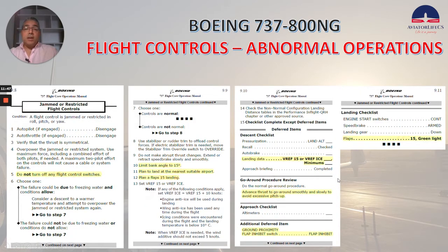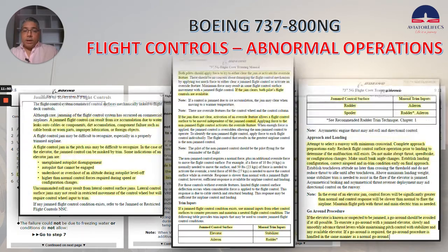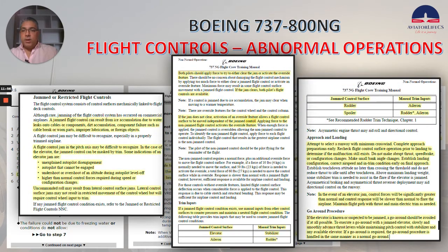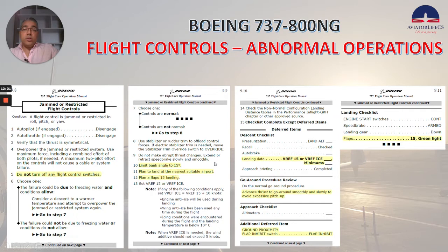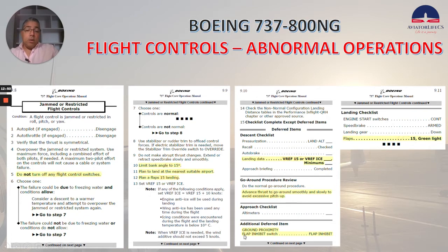Now let's talk about the jammed or restricted flight controls. Here we have the FCTM — go through it and read the whole thing; you are going to get really good information from it. From the checklist, a few highlights: do not turn off any flight control switches. Bank angle has to be limited to 15 degrees. Plan to land at the nearest suitable airport. Plan a flap 15 landing. Normal go-around procedure — however, you need to advance thrust to go-around smoothly and slowly to avoid excessive pitch up. The ground proximity flap inhibit switch goes to flap inhibit. And just a reminder: flap 15 green lights.